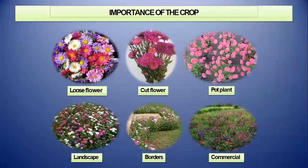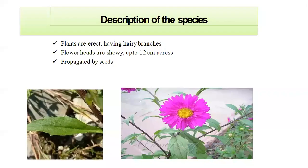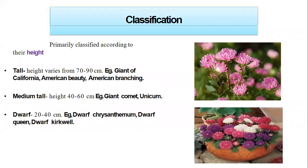China Aster plants are erect with hairy branches. Flower heads are showy, up to 12 cm across. They can be propagated by seeds. Since they are annual in nature, they can be prepared with seeds only.